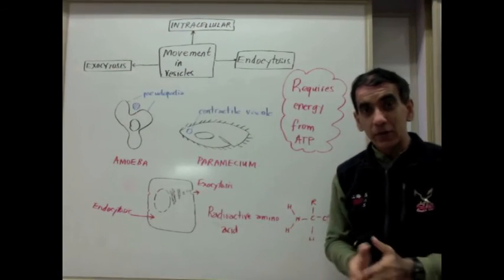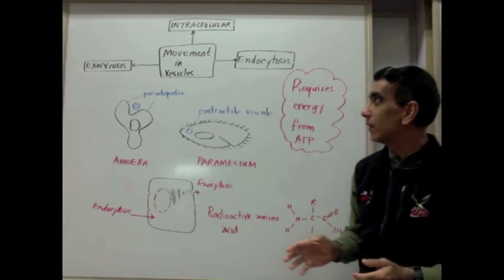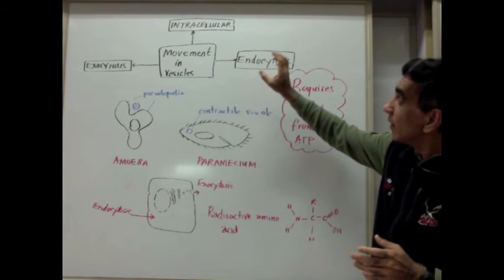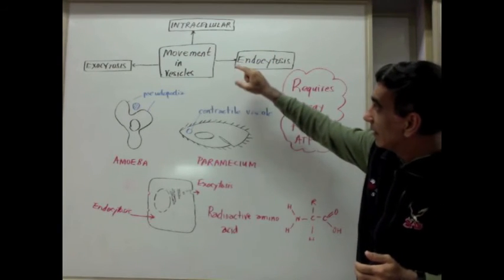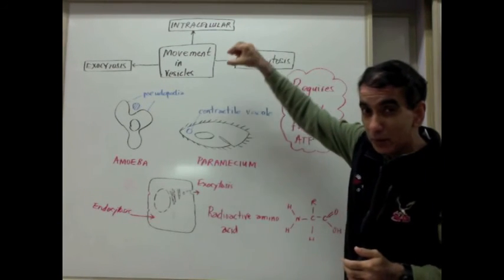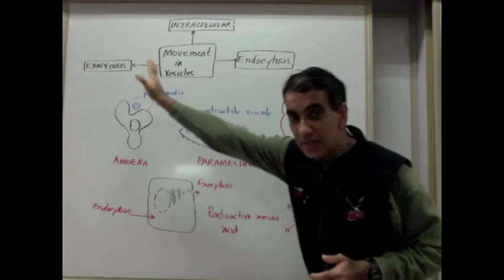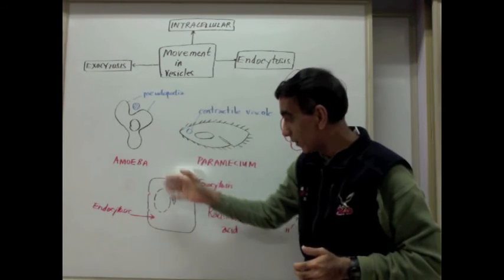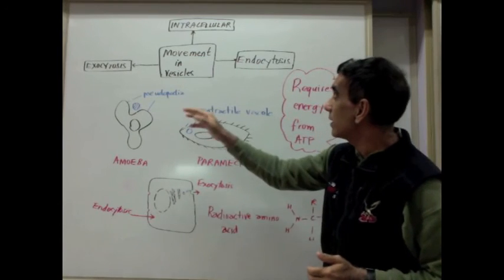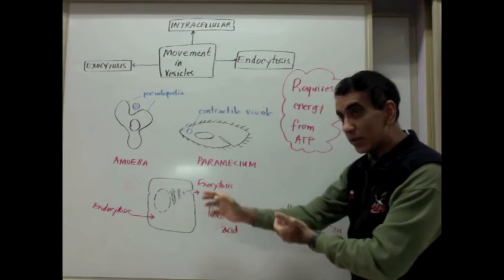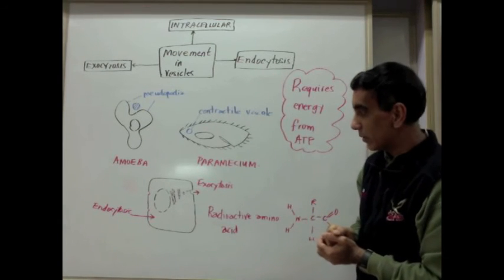Finally, our discussion of transport across the membrane would not be complete until we consider the movement in vesicles. This movement can happen inside of the cell, from one organelle to another. It can happen as substances exit the cell, leaving from the inside to the outside, exocytosis. Or it can happen as substances move from other places into the cell by endocytosis.